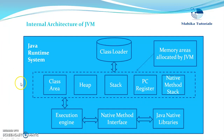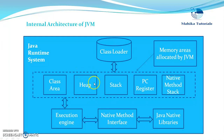The second area which is allocated by JVM is the heap. Heap is the place where objects get memory — that is, when objects are created, they are stored in the heap area.